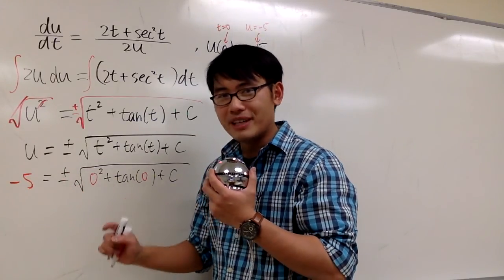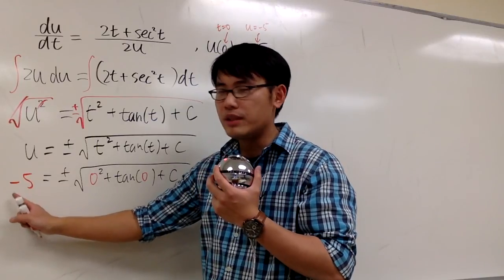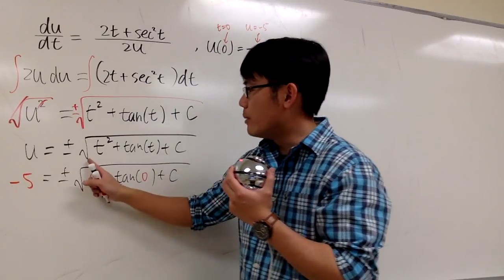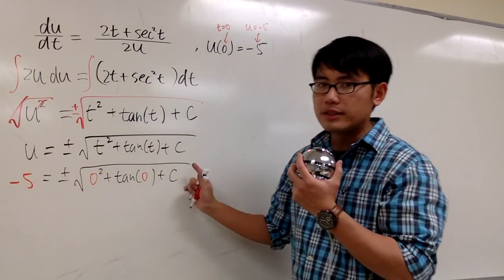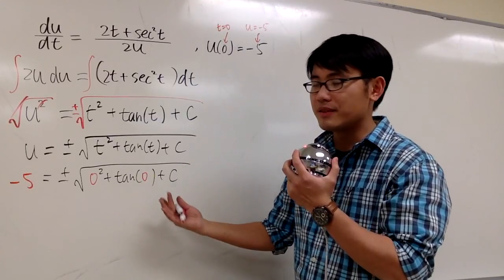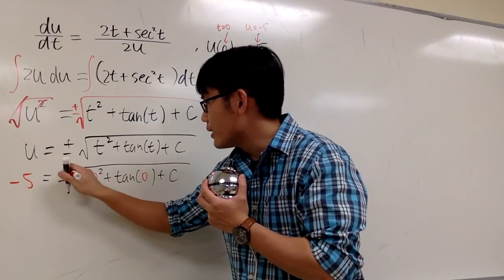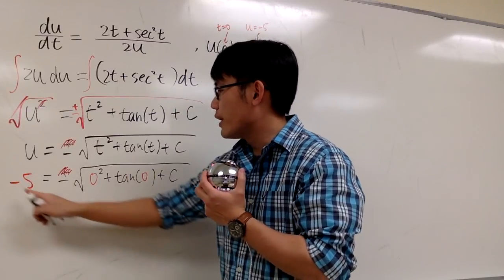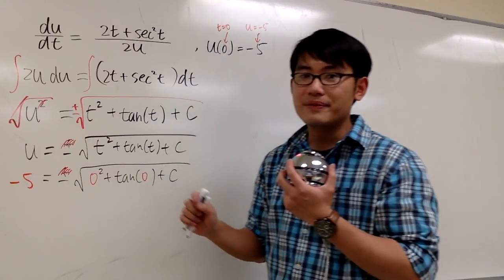We should keep the negative, because on the left-hand side we have a negative already. This is -5. And remember, the output of a square root is always going to be positive. So we are going to actually get rid of the positive version. This way, negative matches negative.